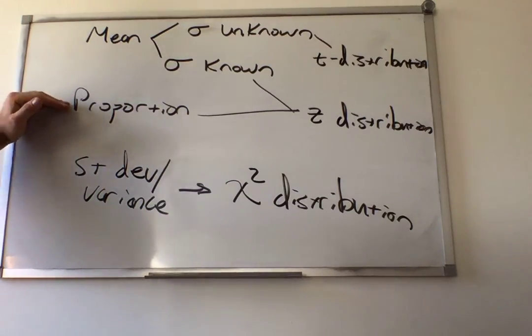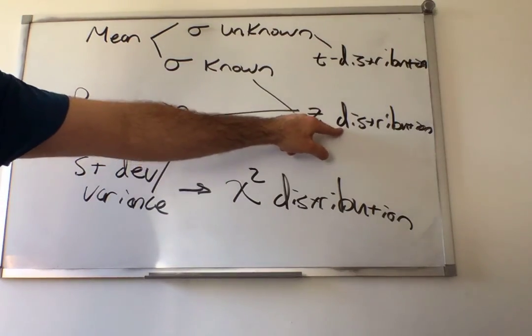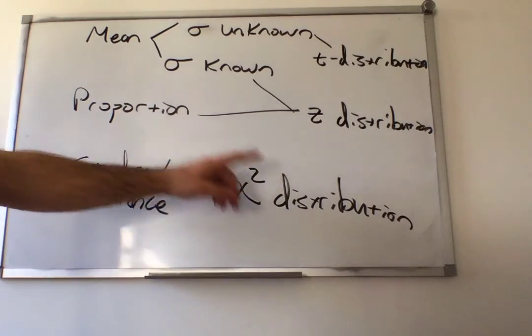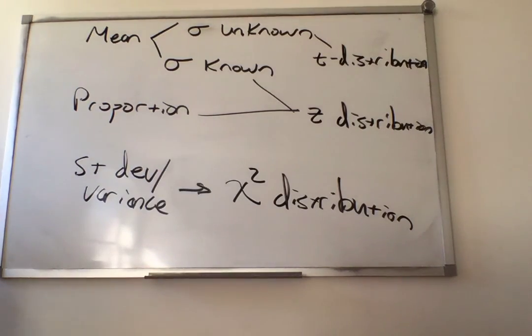If you're dealing with a proportion, always use z-distribution. If you're dealing with standard deviation or variance, always the chi-square distribution.